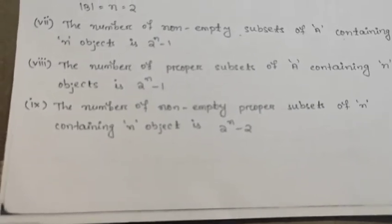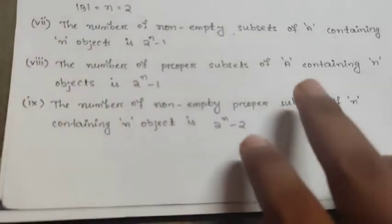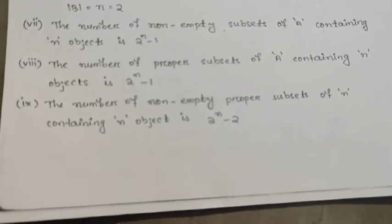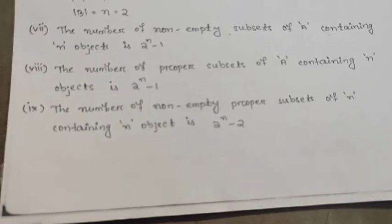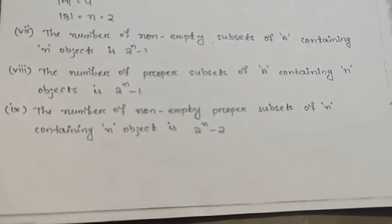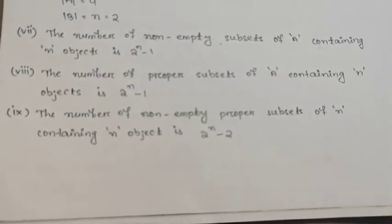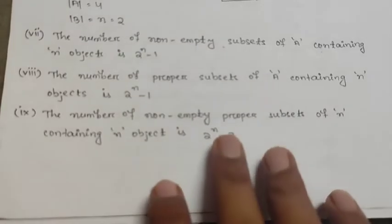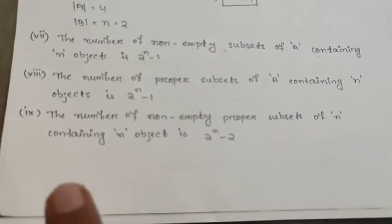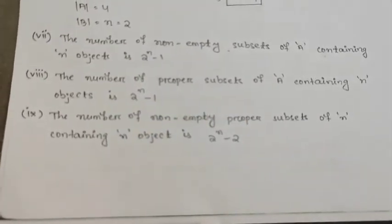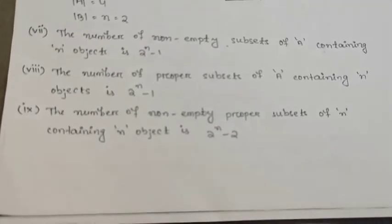The number of proper subsets of a set containing n objects is 2 to the power n minus 1. The number of non-empty proper subsets is equal to 2 to the power n minus 2.